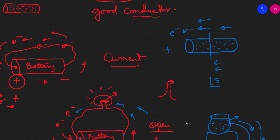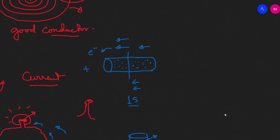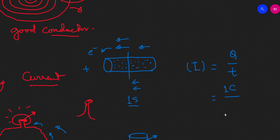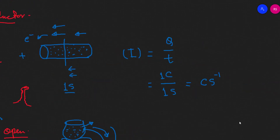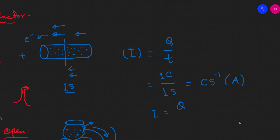The first concept we have is charge, written in every column as Q. The unit of charge is the Coulomb. Then we have time per second, so the unit is Coulombs per second. This is electric current, and its unit is the Ampere. The formula is I = Q divided by T.